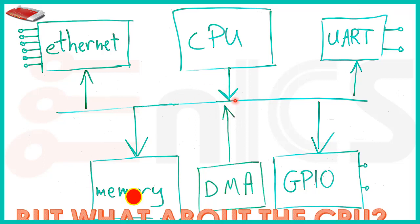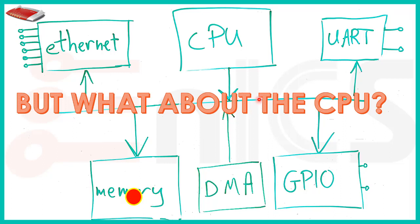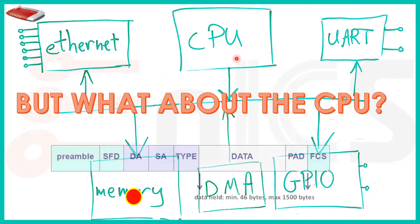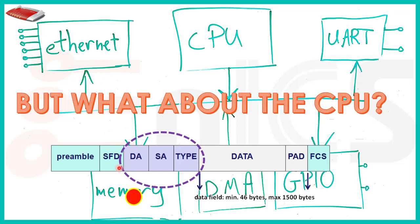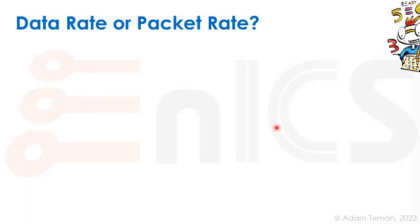But can the CPU actually do anything useful with that data? In a router, all the CPU is doing is deciding where the packet came from and where to send it next. That information is all in the preamble — the source address, destination address, and type. So the CPU doesn't need to process the entire large packet; it only needs to process that header information.